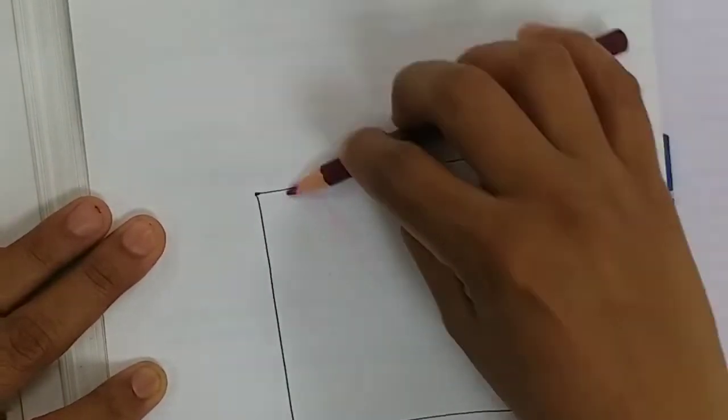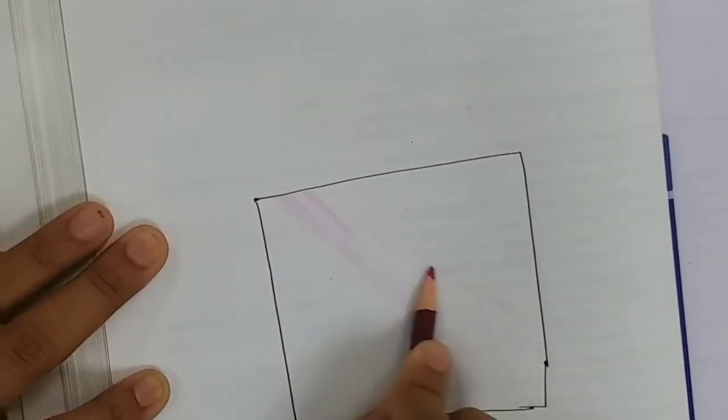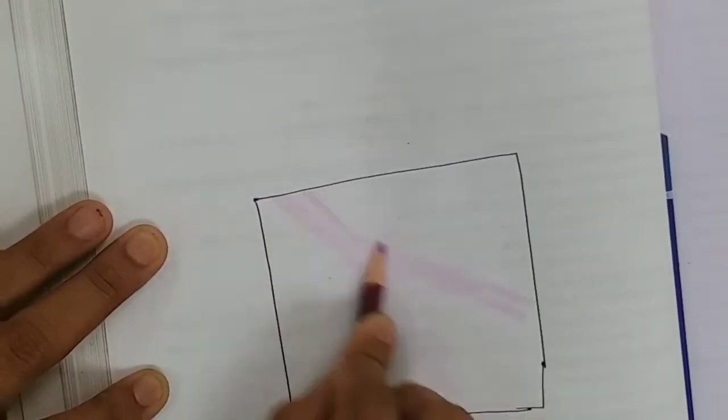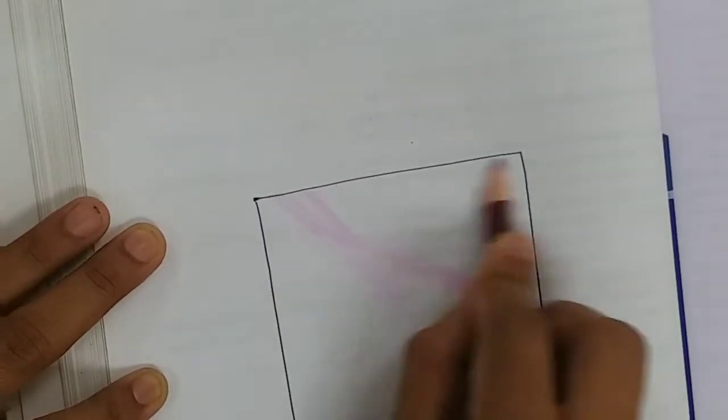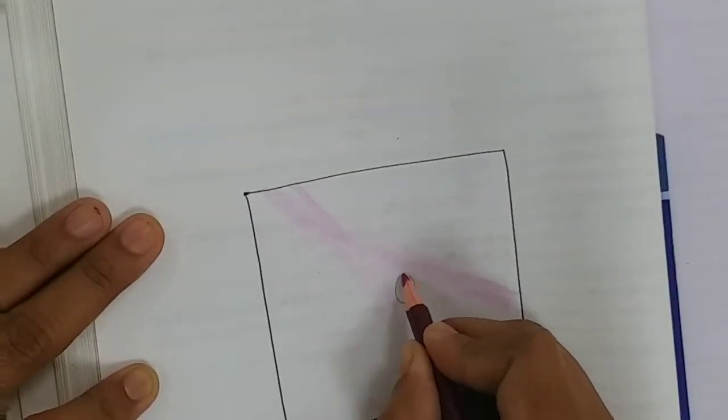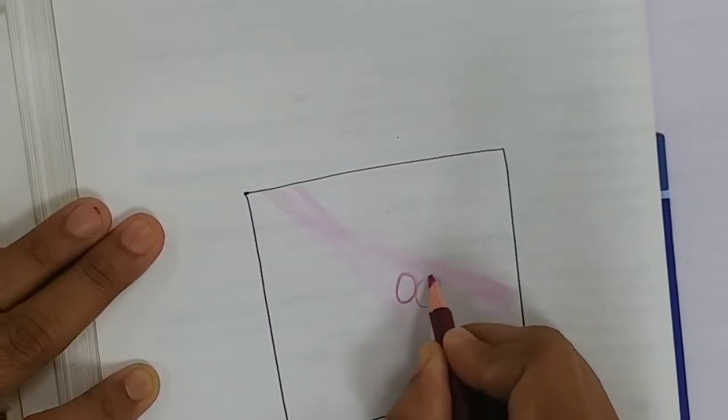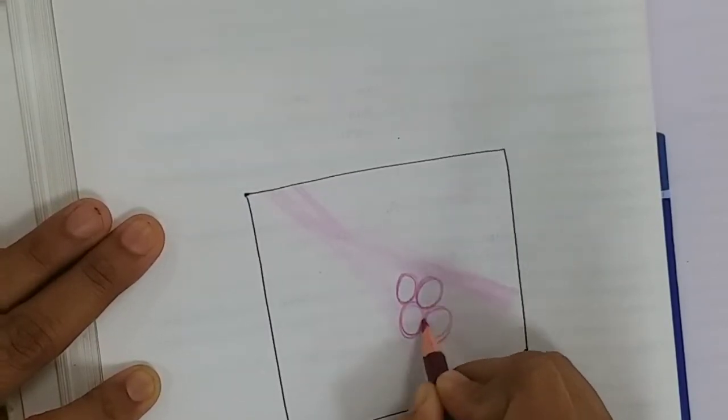Adipose tissue consists of adipocytes, the fat cells which are rounded, occurring singly or in groups. The fat cells and adipose tissue are present in the skin.